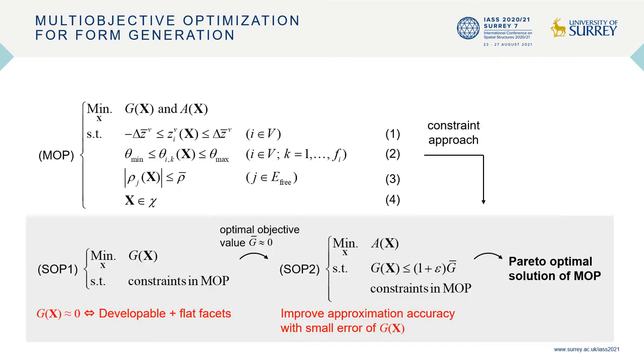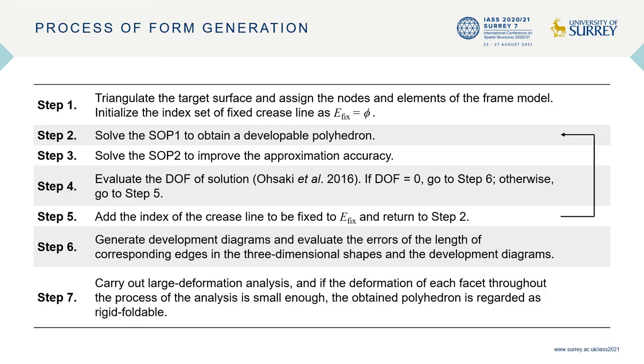The optimal solution of the MOP is found by the constraint approach. First, the single objective optimization problem, SOP1, is solved to minimize G(X) only. Then, the other objective function ΔX of MOP is minimized under relaxed upper bound constraint on G(X).